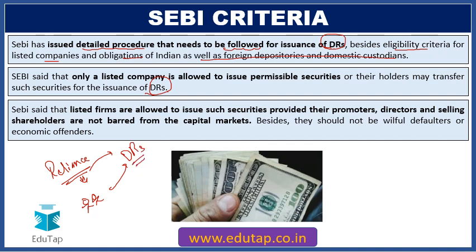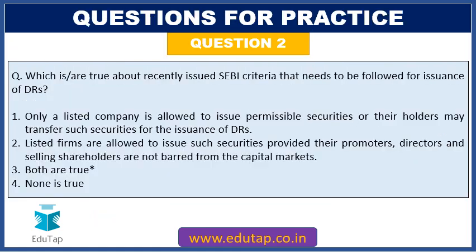SEBI has further said that listed firms are allowed to issue such securities provided their promoters, directors, and selling shareholders are not barred from the capital markets. Additionally, these parties should not be willful defaulters or economic offenders. Based on our discussion, both statements are true, so the answer for this question is option number three — both are true.